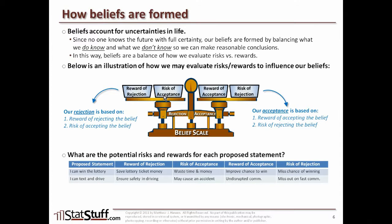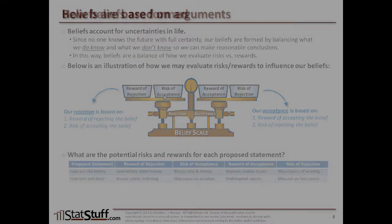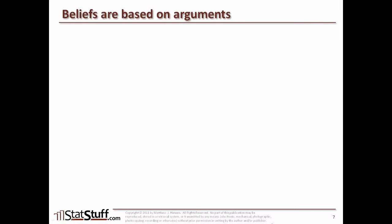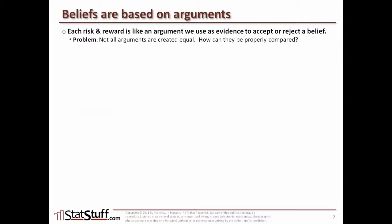The risks and rewards that fill those buckets are really like arguments — evidence we use to decide whether to accept or reject a belief. The problem is that not all arguments are created equal. So how can we properly compare them? Each argument should be weighed to account for its significance — the reward side — or severity — the risk side.